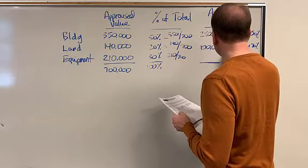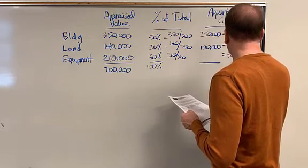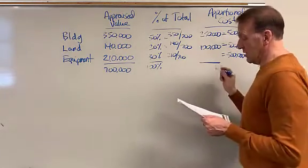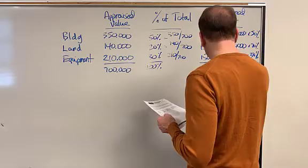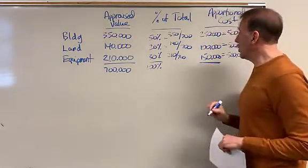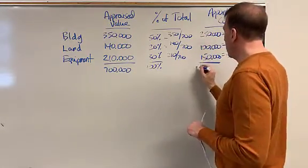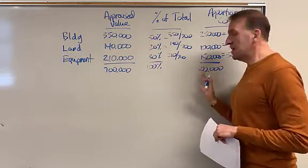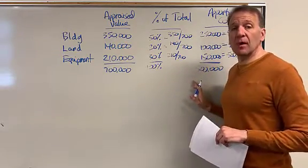And then lastly, we're going to take 30%, which is $150,000, will be allocated to the equipment. So let's total these up. They do total up to my $500,000. So this is the price that I'm paying for my assets.